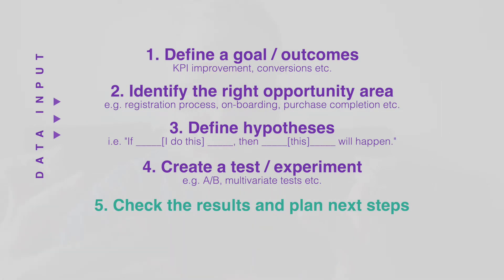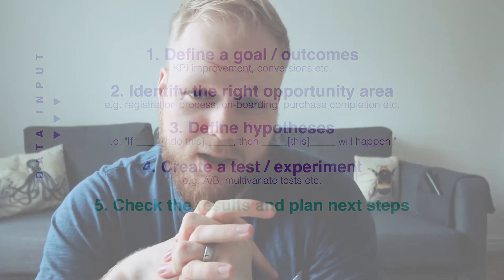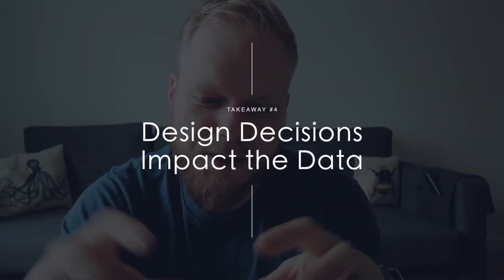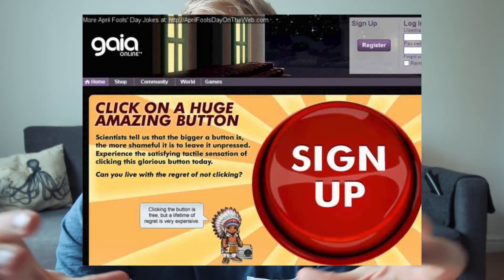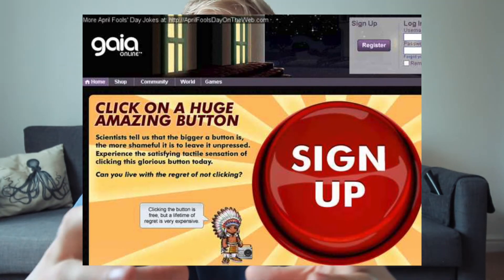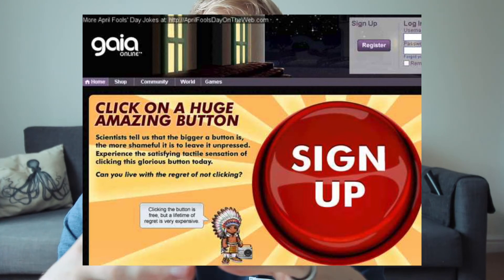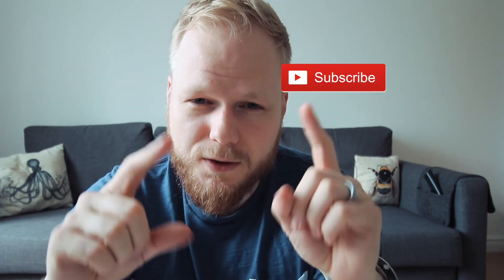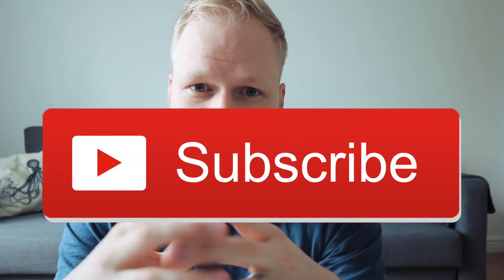These steps can apply to A/B tests, multivariate tests, or any other tests — it's always about being data-aware. The fourth takeaway I found really interesting is how your design decisions can impact your data. An example is Gaia Online, where they made a massive red 'Sign Up' button that took up 50% of the fold space. There were a lot of sign-ups, but people stayed away from other features, skewing the overall data because one element was made so dominant that everything else fell behind.